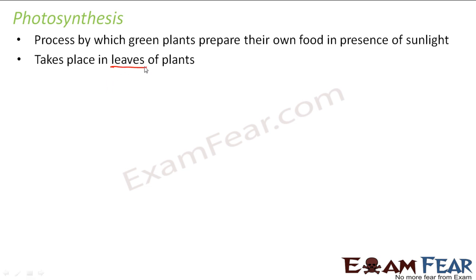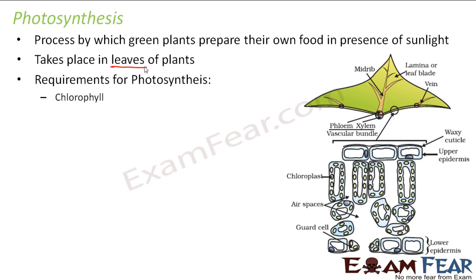So where does photosynthesis take place? It takes place in the leaves of plants. The process of preparing food happens in the leaves, and the food which is prepared is stored in the leaves. The very first requirement is chlorophyll. So what is chlorophyll? It is a green colored pigment which is present inside a cell organelle called chloroplast. Inside the plant cell, we had a cell organelle called chloroplast — the kind of plastids which are green in color are chloroplasts.